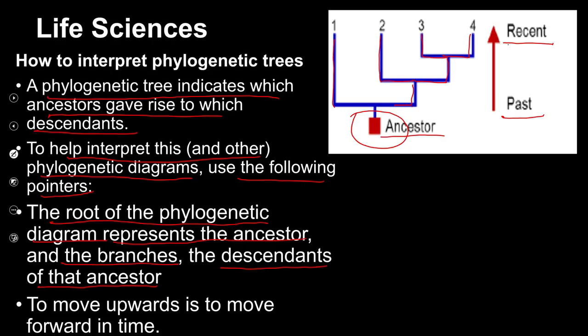In these descendants, further speciation can take place and we have more descendants forming each time. Looking at the common ancestor — this organism was the common ancestor of all of them. However, once a branch splits off, that node is no longer the common ancestor of all species — it becomes the common ancestor only of species two, three, and four, for example. At another branching point, it's no longer the common ancestor of one and two, but it is the common ancestor of three and four.